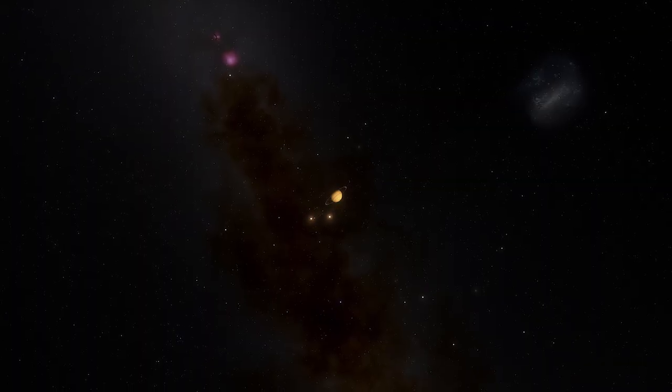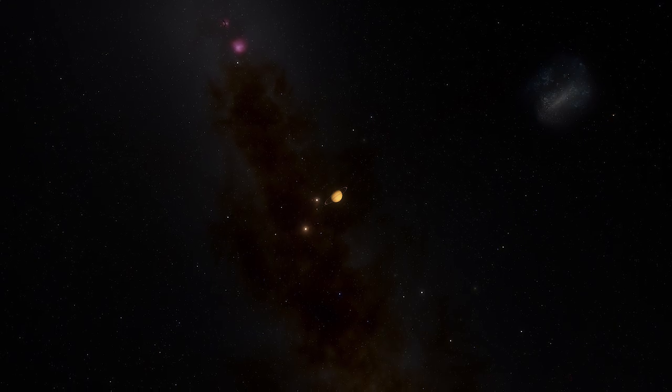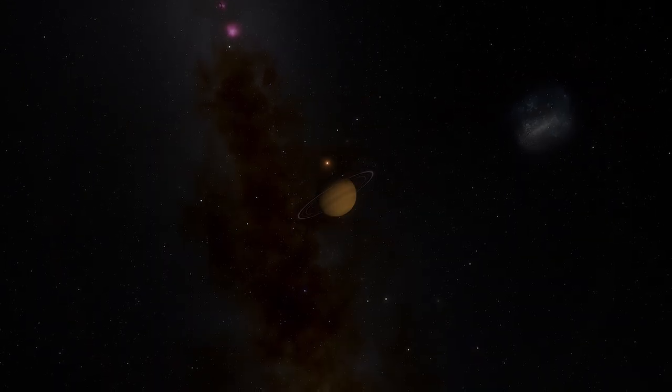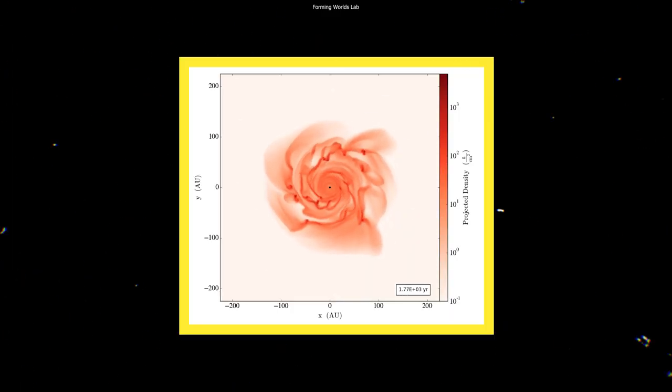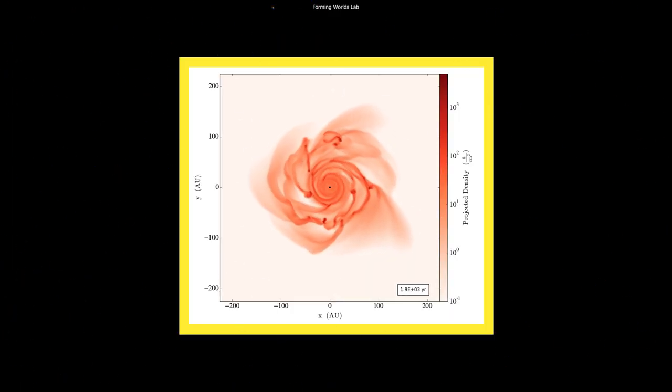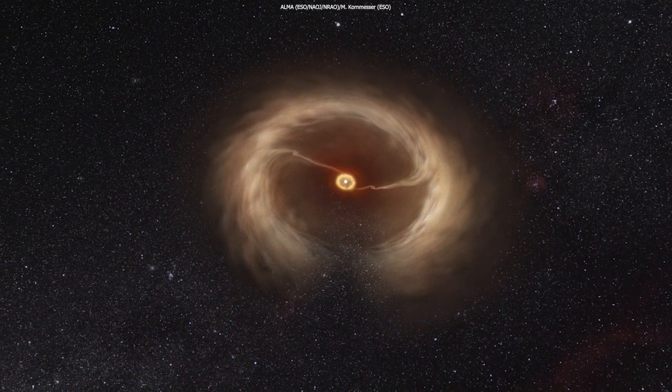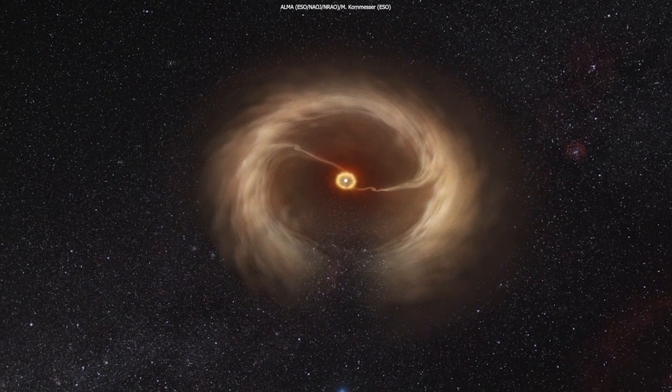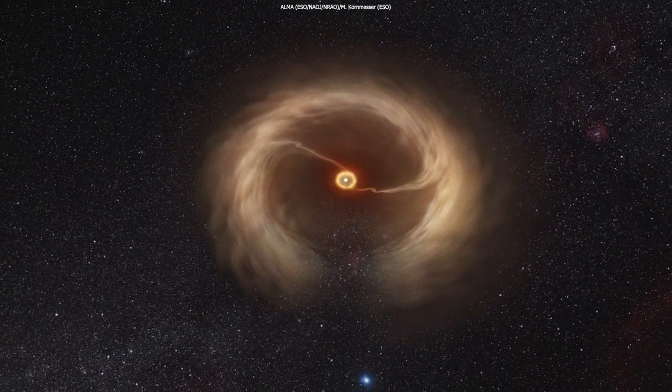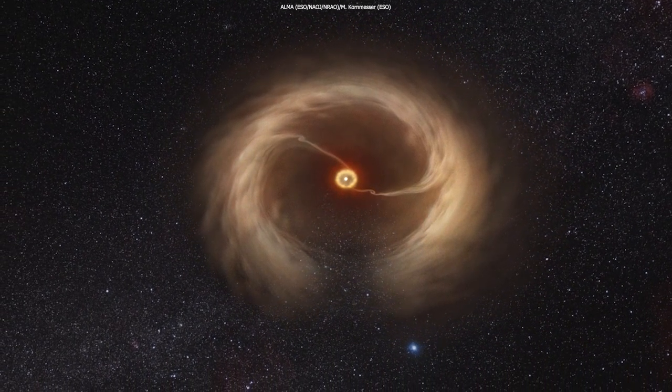Astronomers agree that it's unclear whether ROXS 42BB formed like planets via core accretion or more like a binary star. Core accretion is known as the standard model of planet formation. The model starts with a disk of gas and dust called a protoplanetary disk that surrounds a young star. The gas and dust in the disk clump together due to gravitational forces, eventually forming larger and larger objects.